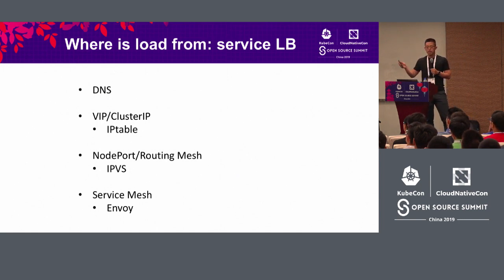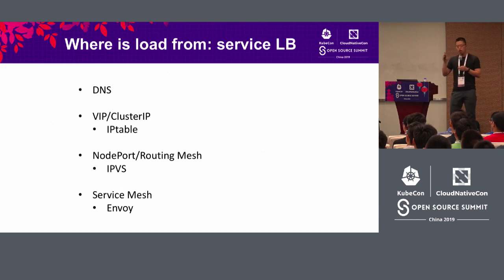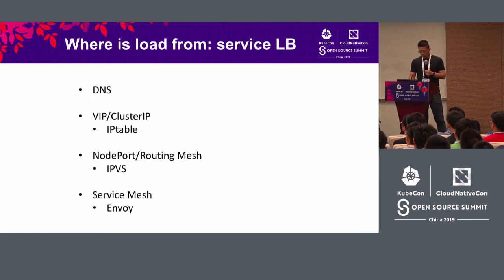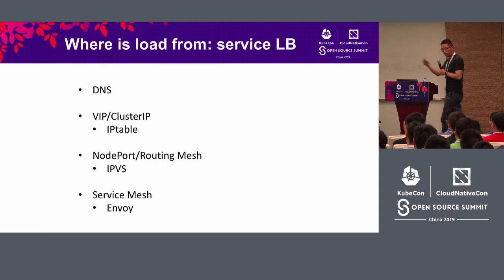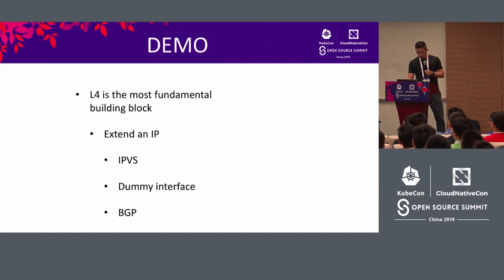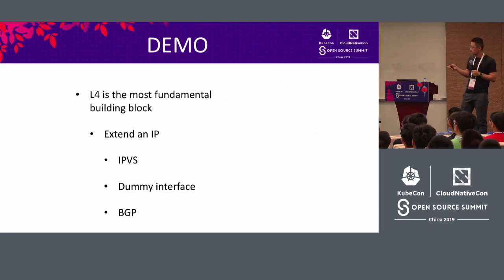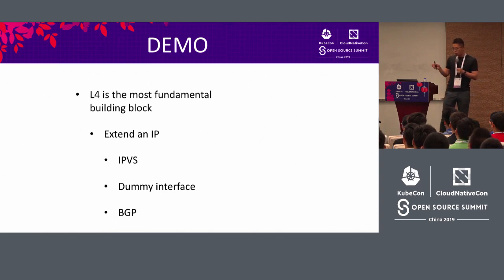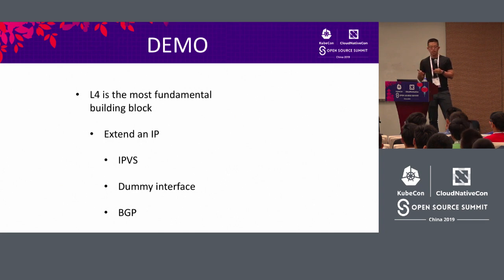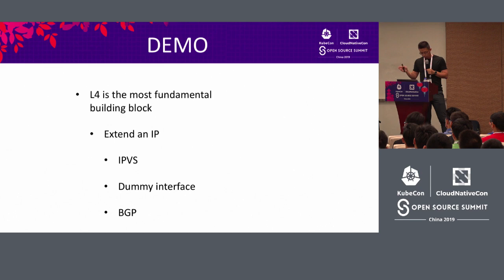Service mesh can also be used here. It provides fancier features like L7 load balancing — for example, it's able to route requests based on URL path in HTTP protocol, routing different requests based on path to different back-end servers. With these concepts covered, talking is very cheap, so let's get into the demo. L4 load balancing is the most fundamental building block, and I'm going to show you how to extend one IP to make it a name or an abstraction in terms of L4 networking using widely available open source software like IPVS, dummy interfaces, GoBGP, and ECMP.